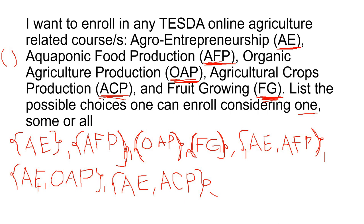Now the threes — combinations of three courses. For example: AE, AFP, OAP; then AE, AFP, ACP; AE, AFP, FG; AFP, OAP, ACP; AFP, OAP, FG; OAP, ACP, FG — and so on. Exhaust all possible three-course combinations before moving to four.